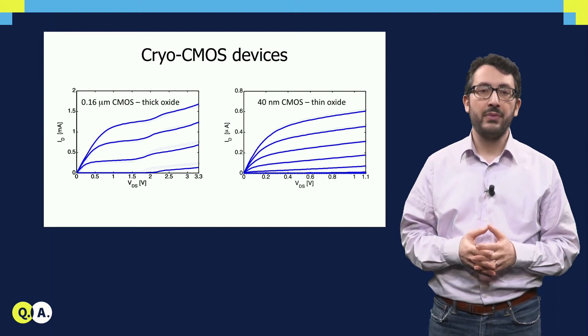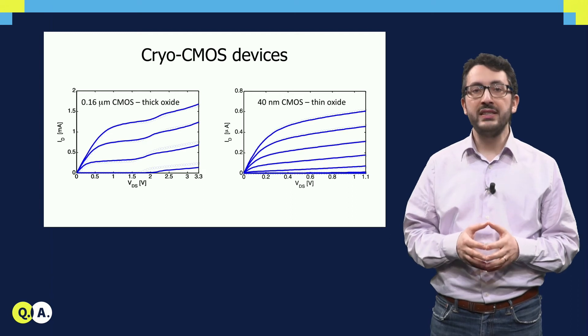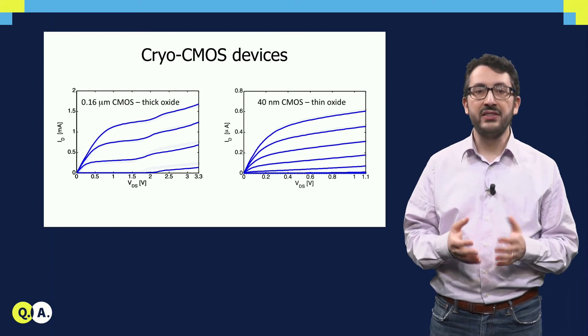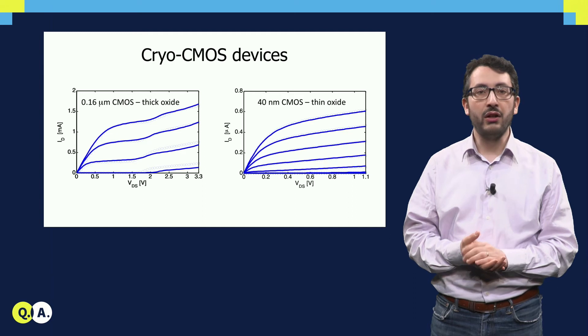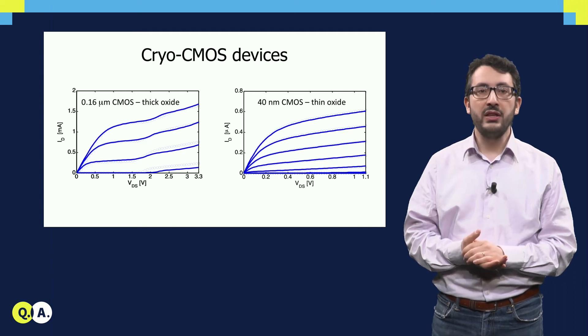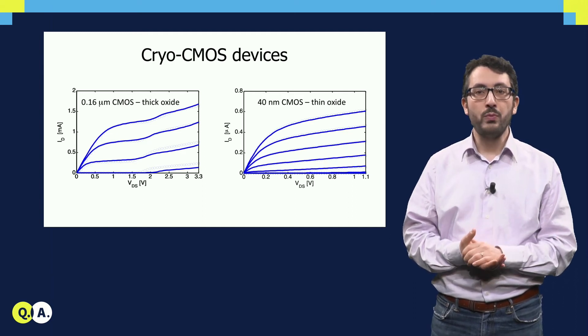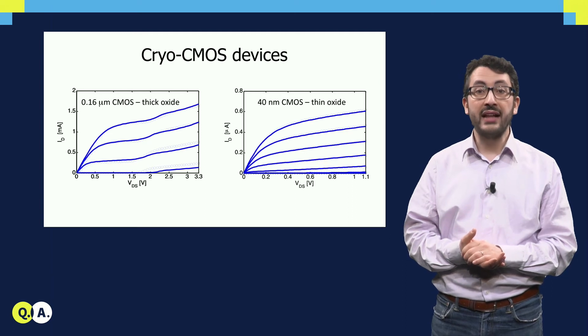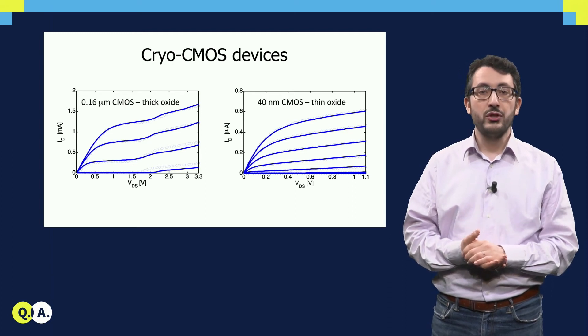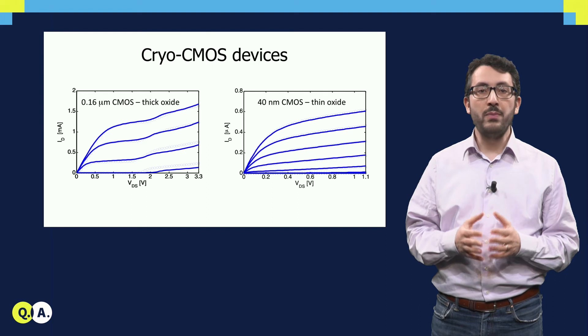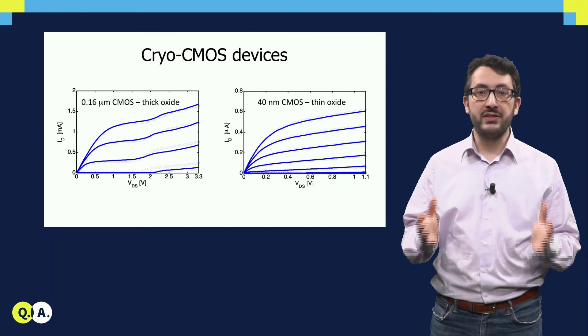What is the bottom line here? Basically, by using the standard models and the standard techniques, I can model these devices also at cryogenic temperature, so that I can really use them to make electronics that work at cryogenic temperatures. So by using these techniques, I will be able to build such complex systems.